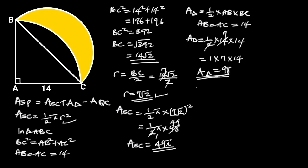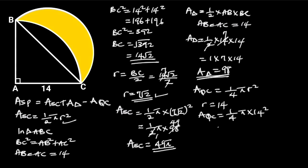Next, let's find the area of the quarter circle. The area of the quarter circle is equal to 1/4 pi r squared. The radius of the quarter circle is equal to 14. Substituting the radius, the area of the quarter circle will be 1/4 pi times 14 squared. 14 squared is equal to 196, and 196 divided by 4 is 49. Hence, the area of the quarter circle is equal to 49 pi.